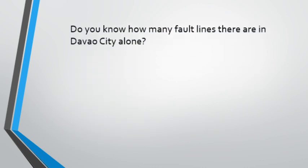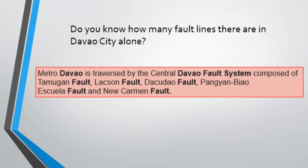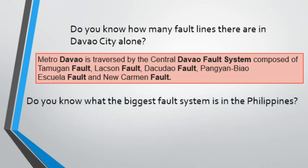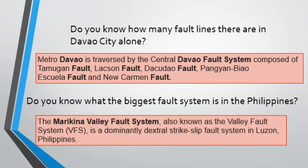Do you know how many fault lines there are in our city alone? Metro Davao is traversed by the central Davao fault system, composed of the following: the Tamugan fault, Lakson fault, Dakodaw fault, Panyanbyaw fault, Esquela fault, and the New Carmen fault. Do you also know what the biggest fault system in the Philippines is? It is the Marikina Valley fault system, a dominantly dextral strike-slip fault system in Luzon, Philippines.